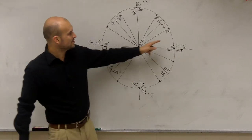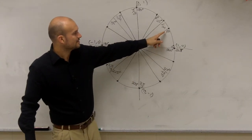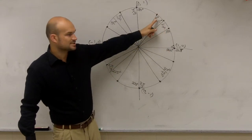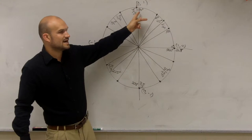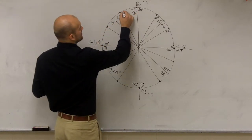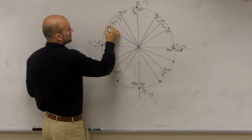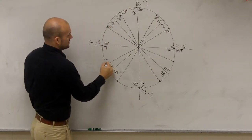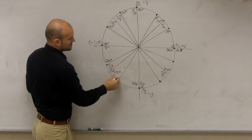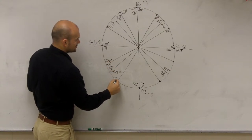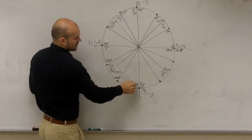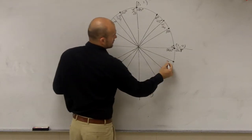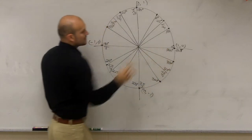If you guys want to figure out the rest of them, what you notice is if you go 30, then all you've got to do is keep adding increments of 30: 30, plus another 30 is 60, plus another 30 is 90, plus another 30 is 120, plus another 30 is 150, plus another 30 is 180, another 30 is 210, plus another 30 is 240, plus another 30 is 270, plus another 30 is 300, 330, and 360.